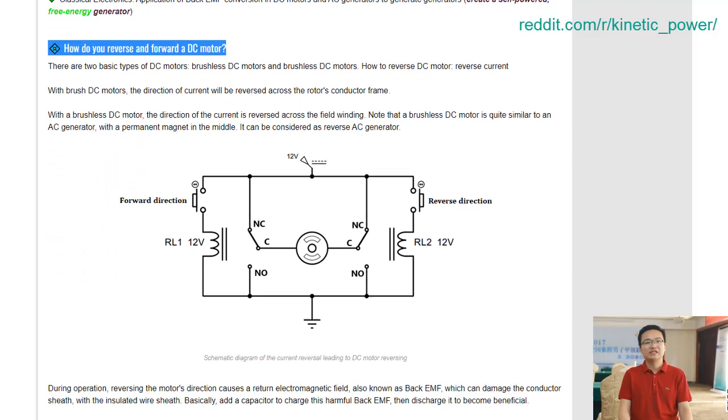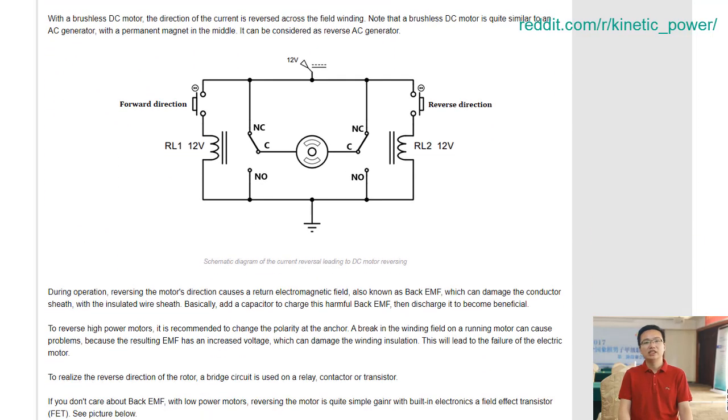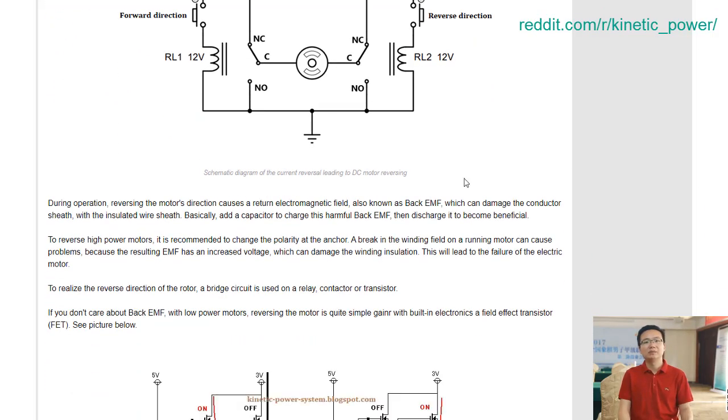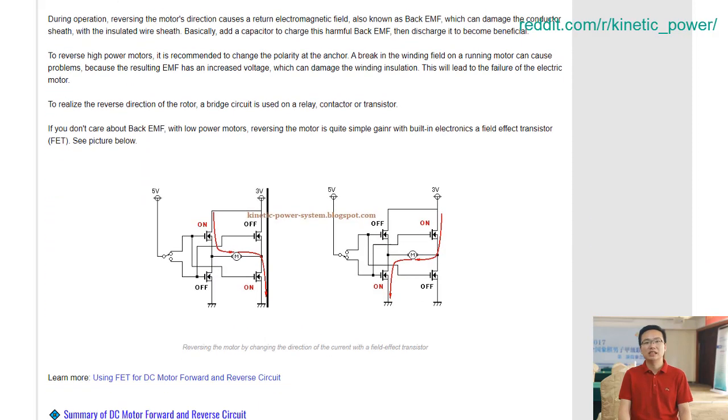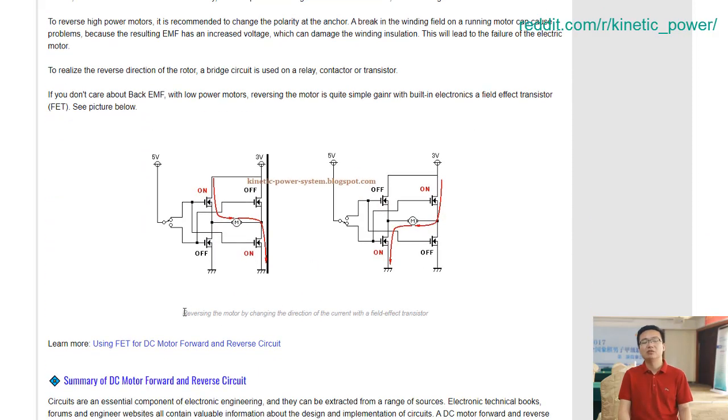This allows them to control their system in both clockwise and counterclockwise rotations. This type of circuit is very useful in various applications such as robotics, CNC machines, conveyor systems, and many more.